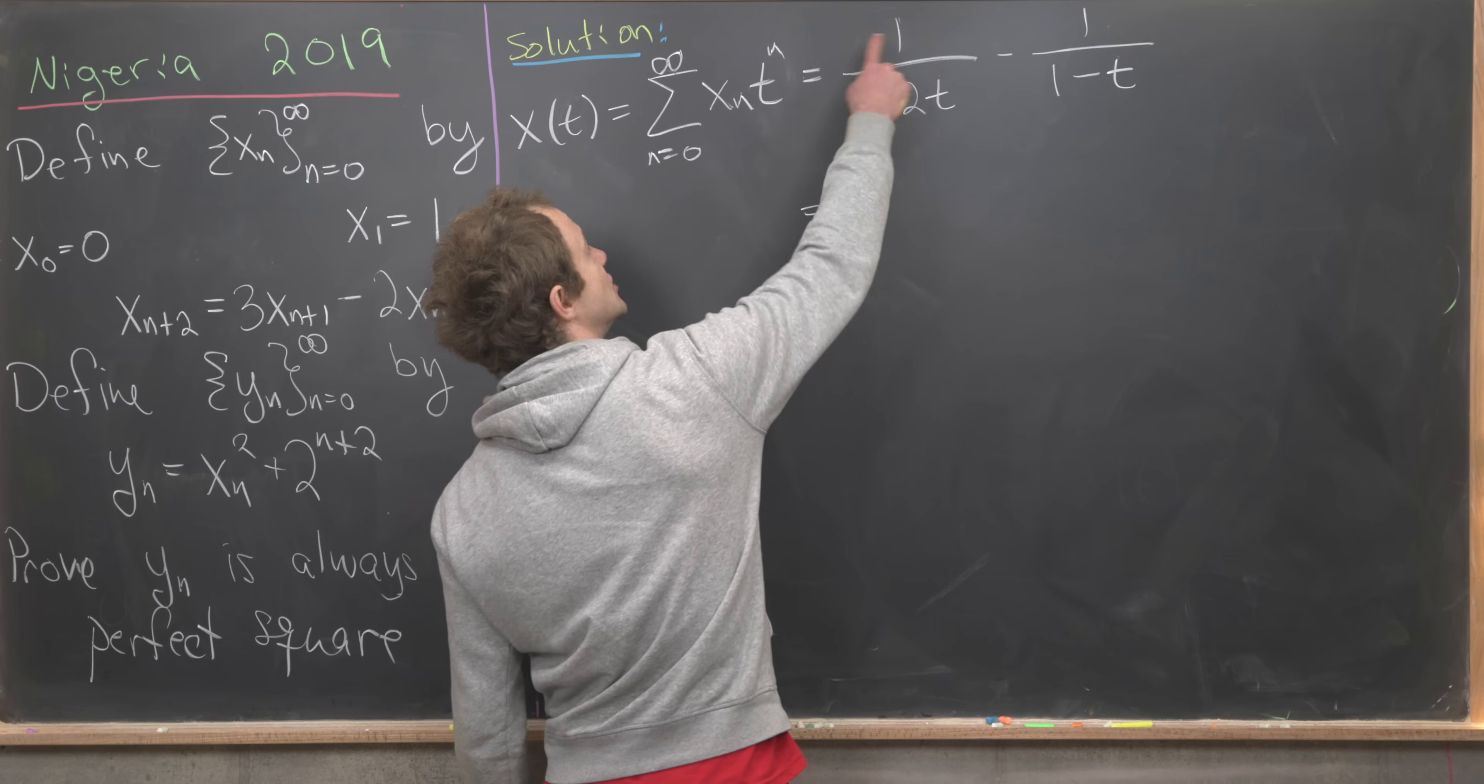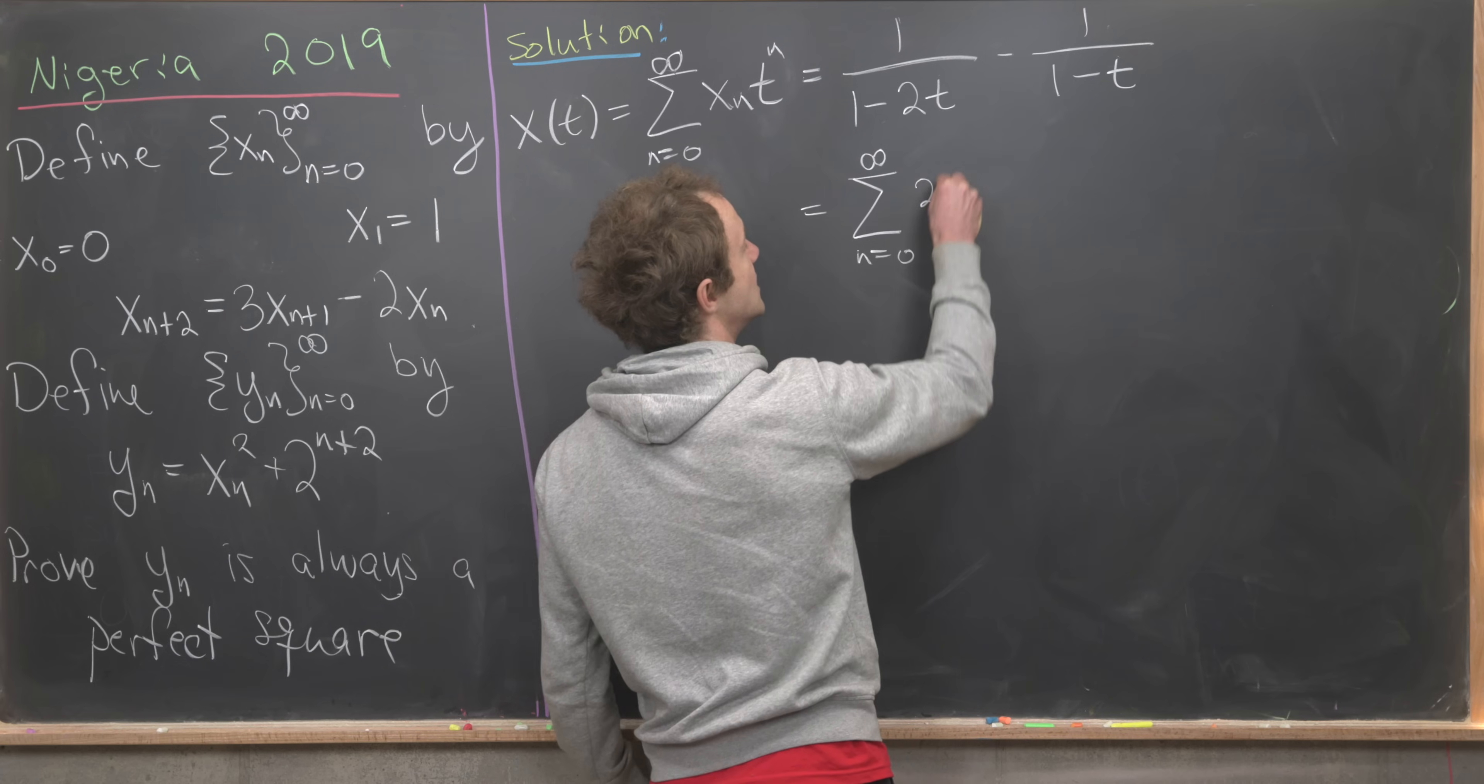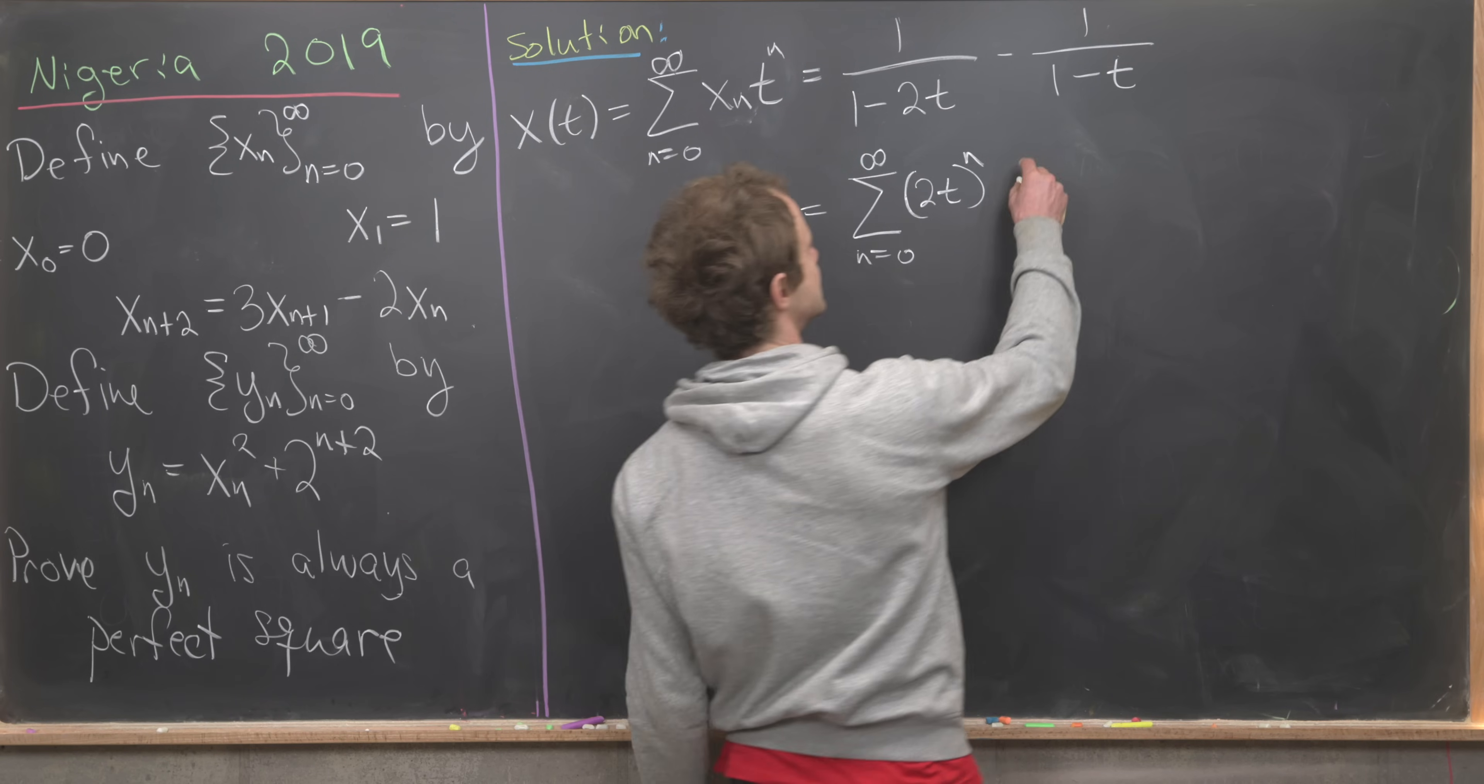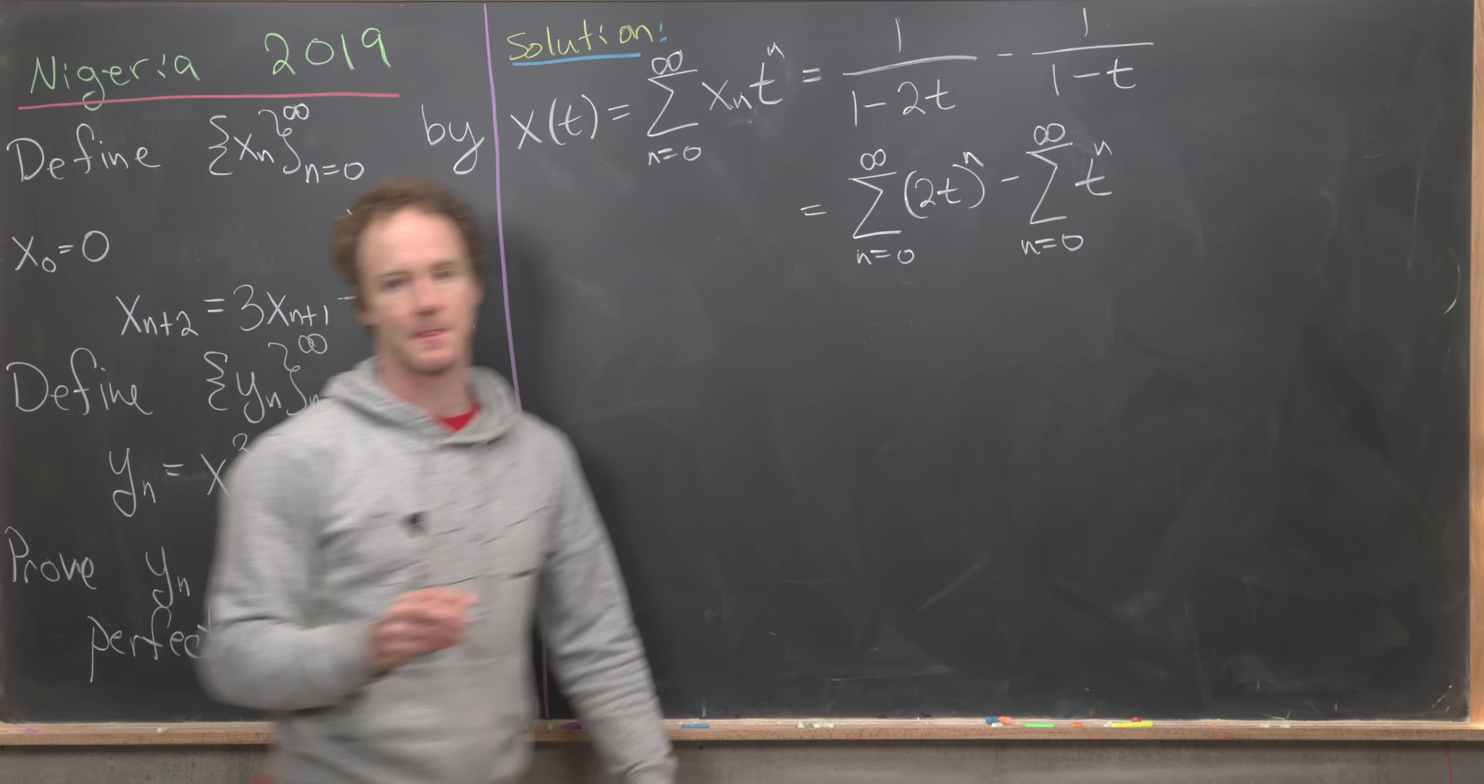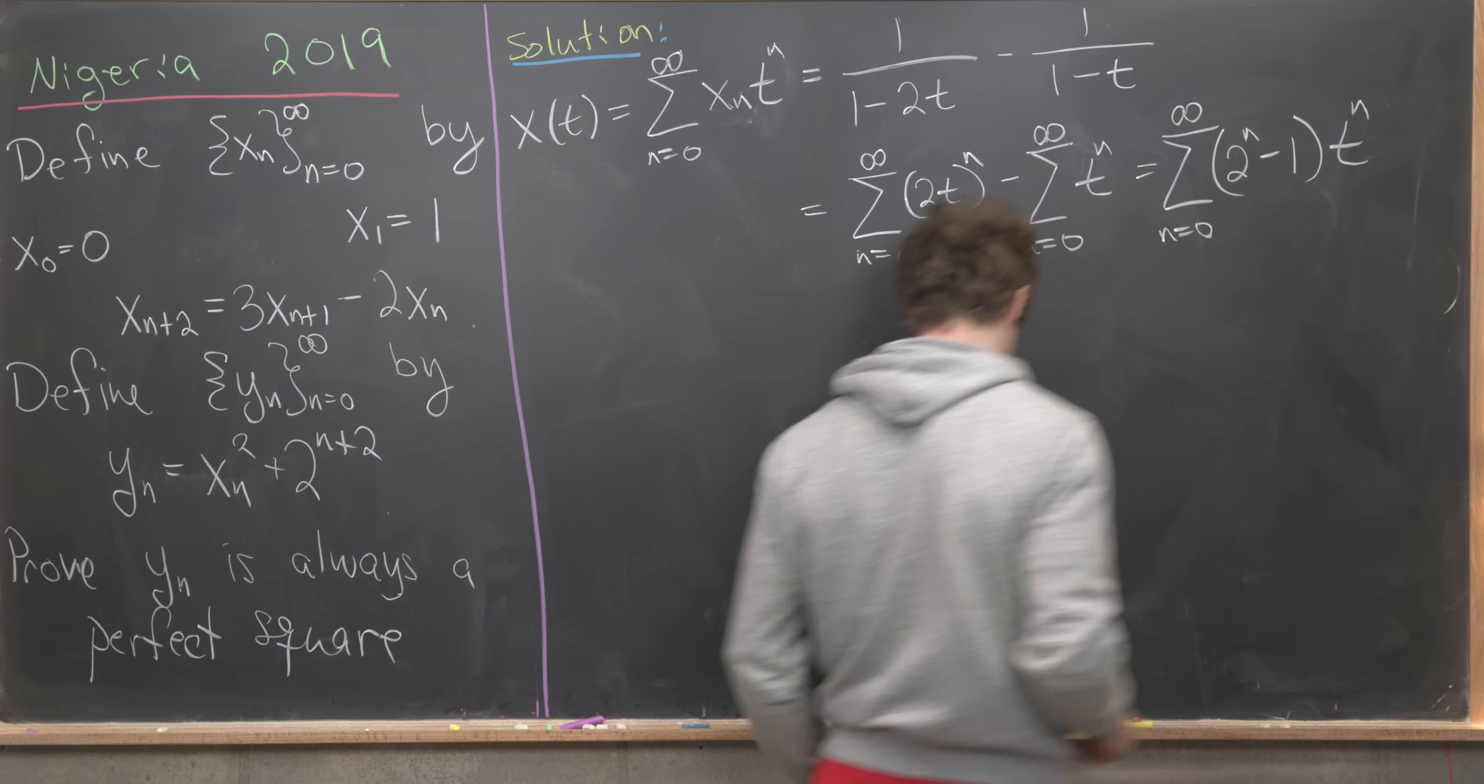This first guy has a geometric series form where the common ratio is equal to 2 times t, so that's going to give us the sum as n goes from 0 up to infinity of 2 to the n times t to the n. But for this one the common ratio will be t. We've got a minus sign so that's going to give us minus the sum as n goes from 0 up to infinity of t to the n. We'll put those two sums together leaving us with the sum as n goes from 0 to infinity of 2 to the n minus 1 times t to the n.